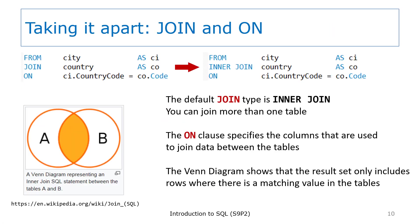Let's take another look at the join and on keywords. You see two blocks of statements including the from, join, and on keywords — these two blocks are equivalent. The keyword join by itself is a shortcut for inner join, which is a specific type of join. You can join more than one table, as you'll see on the next slide. The ON clause specifies the columns used to join the data between the tables. The concept of an inner join is based on mathematical set theory. This Venn diagram shows that an inner join includes rows from the first set A and the second set B only when there is something in common between a member of either set. In our example, we are including rows from the city table and the country table only when there is a match on the country code column.